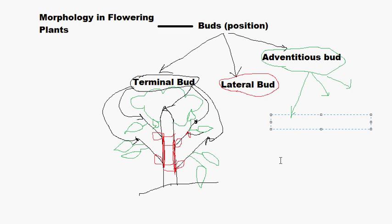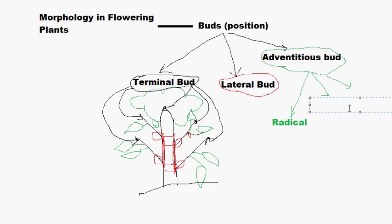Roots are called 'radical' in botany — whenever you hear the term radical, it is talking about roots. So radical adventitious buds refers to the adventitious buds which have developed from the roots. The next category is the cauline adventitious buds — 'cauline' refers to the stem. So cauline adventitious buds always refers to adventitious buds which have developed from the stem or its branches.